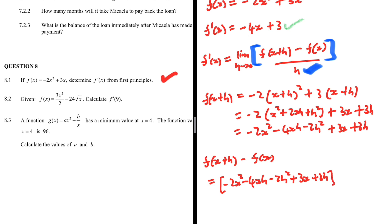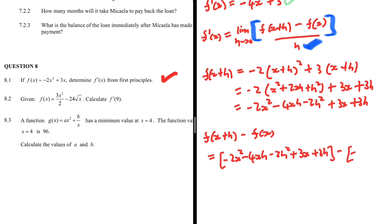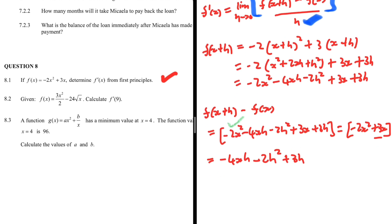...and we subtract f(x), which is -2x² + 3x. Working through term by term: -2x² minus (-2x²) gives zero; -4xh has no like term so it stays; -2h² has no like term so it stays; +3x minus 3x gives zero; and +3h has no like term so it stays. Therefore f(x+h) − f(x) = -4xh - 2h² + 3h.